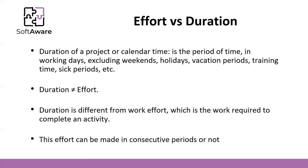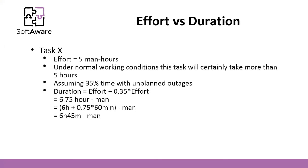But imagine that in your schedule — with classes, other projects, meetings — you can only dedicate one hour this week and one hour next week to that task. The calendar time you give your customer would be two weeks, despite the task only taking two hours of actual work. Furthermore, duration must account for unplanned outages: it is consensus that approximately 35% of time is lost to unplanned outages.